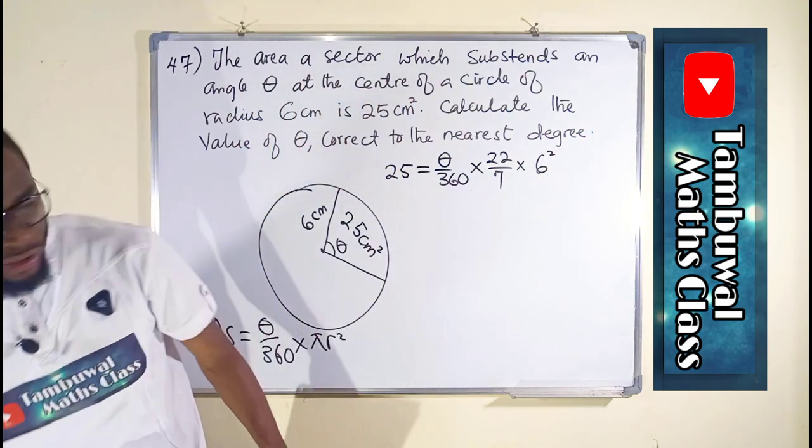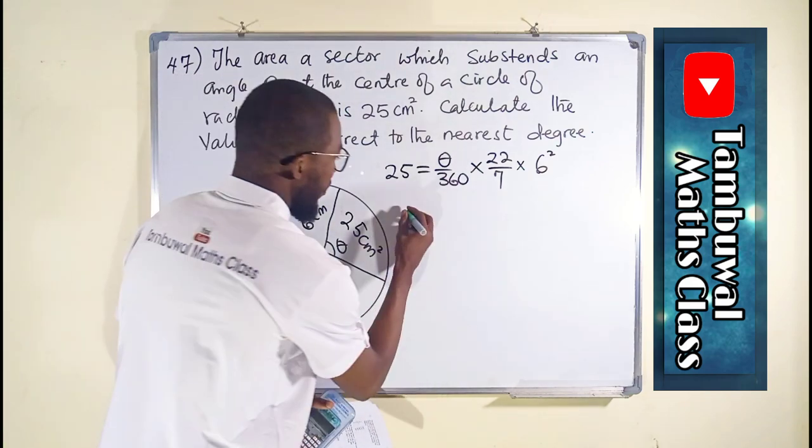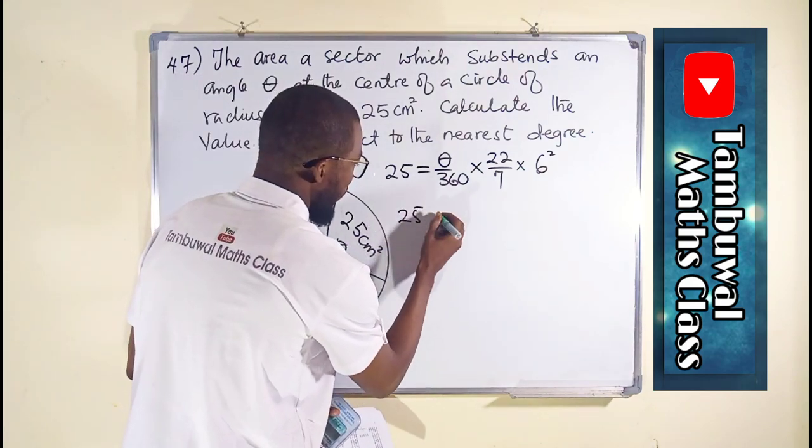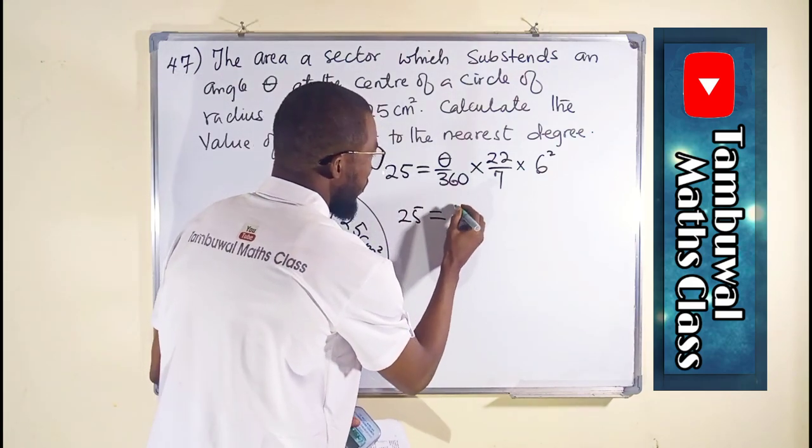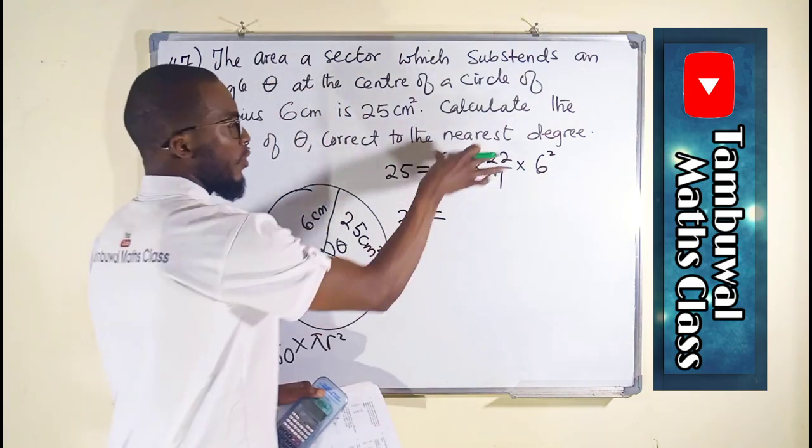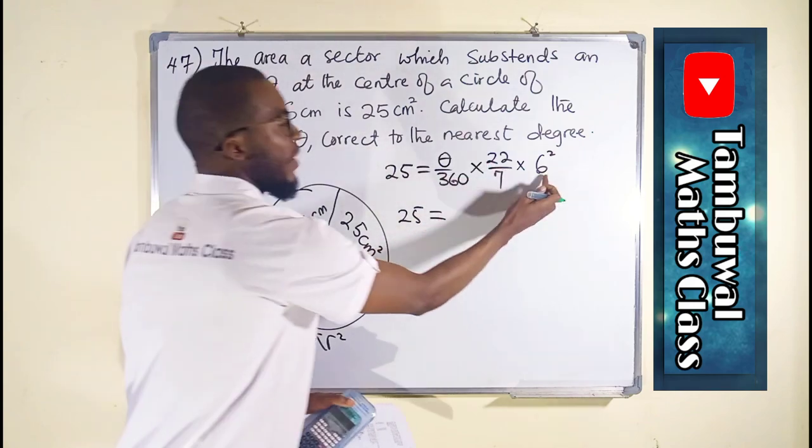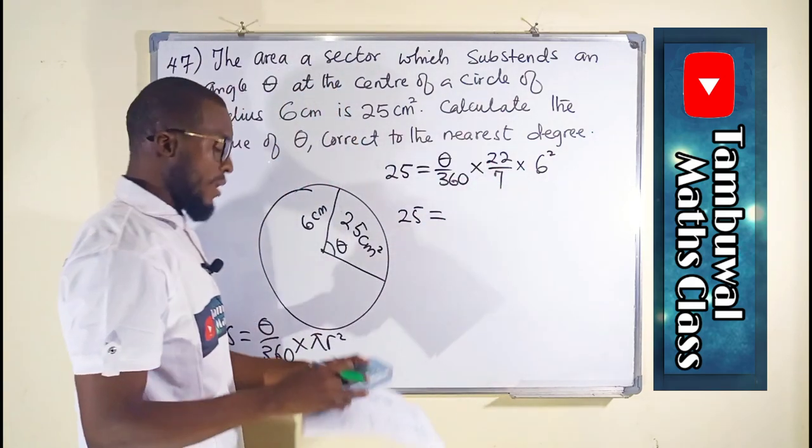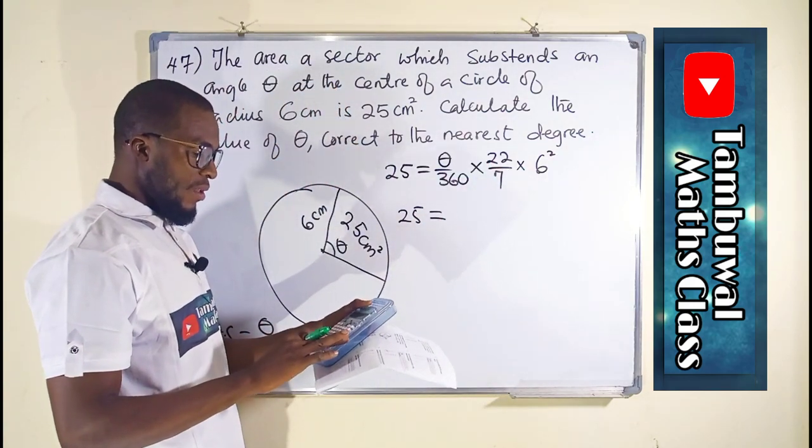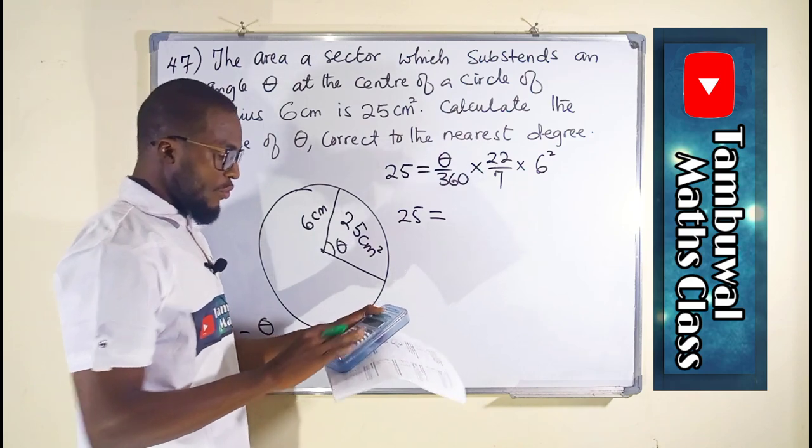Let me use my calculator and expand. This is 25 equals, we are going to times the numerators together and denominators together. We have 6 squared which is 36 and that 36 times this 22.